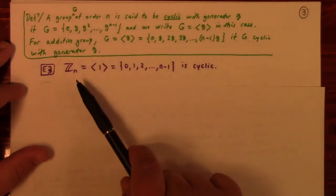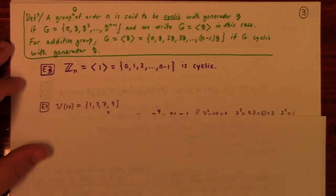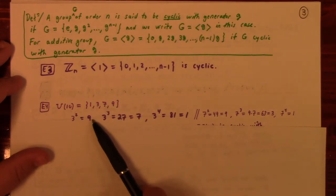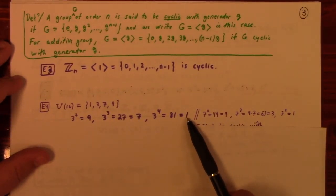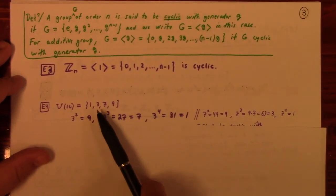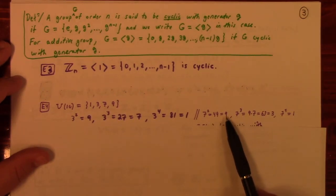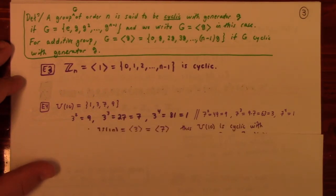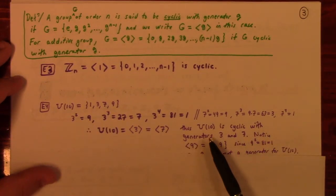For example, Z_n is cyclic because if you take 1 and just add it to itself repeatedly, you get all of Z_n. Another example: U_10, which has elements {1, 3, 7, 9} mod 10. If you look at powers of 3: 3² = 9, 3³ = 27 ≡ 7, 3⁴ = 81 ≡ 1 mod 10. So powers of 3 give you everything in U_10. Similarly, powers of 7 also generate all of U_10. So U_10 is cyclic with generators 3 and 7.